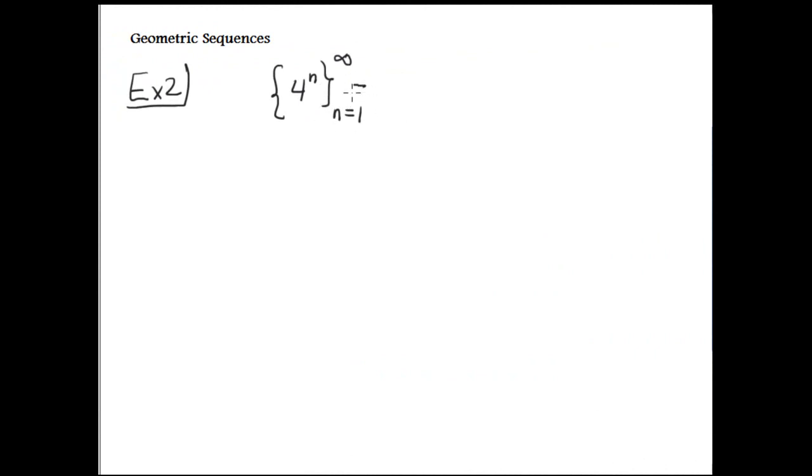If you expand this, this is 4, this is 16, this is 64, and so on. Now, it's obvious that the A1 is 4. It's obvious that the common ratio is a coincidence that it's also 4. It's greater than 1, therefore it diverges.